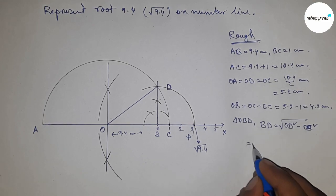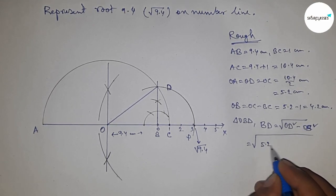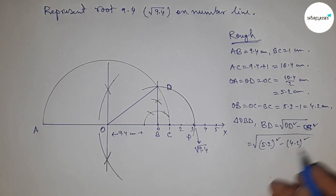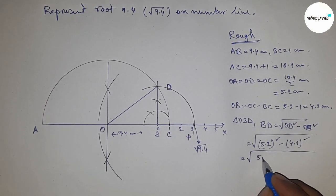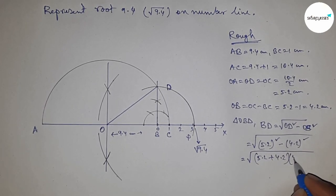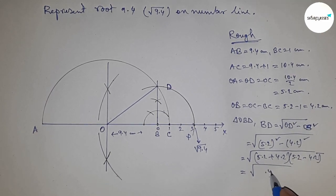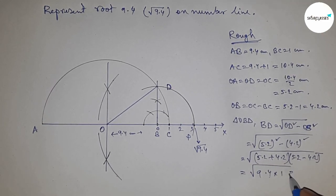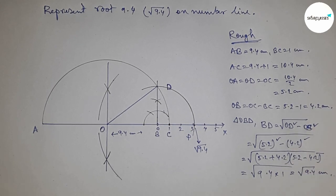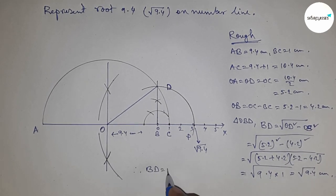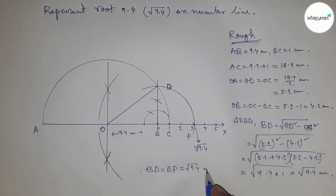Putting the values of OD and OB and applying the formula a squared minus b squared equals (a plus b)(a minus b), we get 9.4. Therefore, BD equals BP equals the square root of 9.4 centimeters. That's all, thanks for watching.